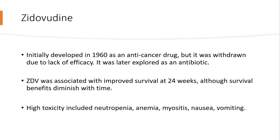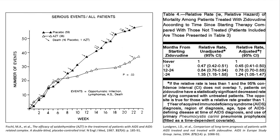An original paper showing the efficacy of zidovudine demonstrated significantly reduced serious events out to 24 weeks compared to placebo. More data coming into the 1990s showed the relative rate of mortality was decreased at 24 months among patients treated with zidovudine, but beyond that there was actually a slight increase in mortality farther out in time, presumably due in part to the toxicities associated with the medication.